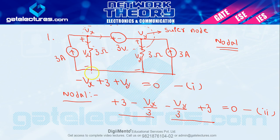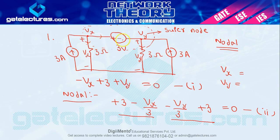Equation number 1 KVL equation है और equation number 2 nodal equation है। दोनों में सिर्फ Vx और Vy — दो unknowns हैं, और दो equations हैं, तो simple math से value of Vx and Vy calculate कर सकते हैं। यह आपका super node analysis होता है। Nodal analysis में सिर्फ KCL plus Ohm's law use होता है, जबकि super node में KCL plus KVL plus Ohm's law use होता है।